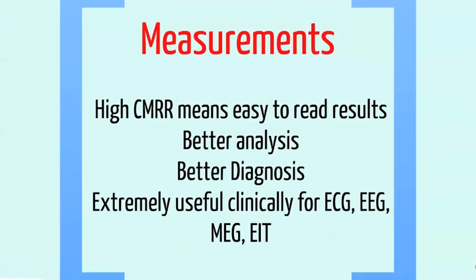So in terms of taking measurements at the surface of the human body, if we have a high common mode rejection ratio, this means that the results should be fairly clear in graphical form to a clinician. This means better analysis can be done on the results, and so a better diagnosis of the patient can be achieved. This is very useful in a hospital for techniques such as electrocardiography, electroencephalography, magnetoencephalography, and electrical impedance tomography.